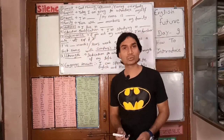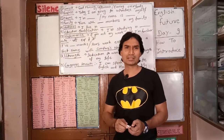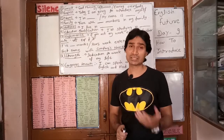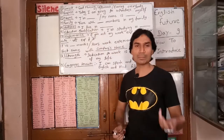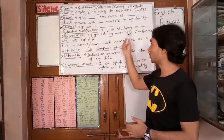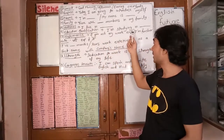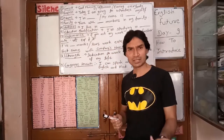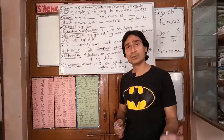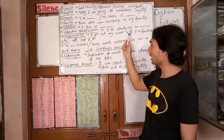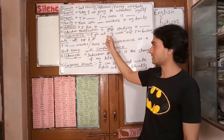The sixth point is education qualification. If you are a graduate, you can say 'I am a graduate.' Or if you are a school student, you can say 'I am studying in 10th class, 10th standard, or 12th standard.' If you are a graduate or post-graduate, you will tell your education qualification.